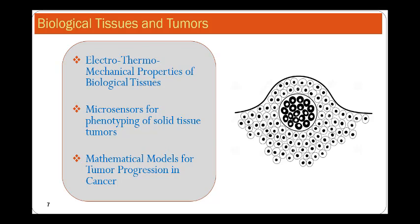We will start with understanding electrothermomechanical properties of biological tissues, where we will study electrical model of cell, electrical equivalent circuit modeling of cell culture on the surface, healthy tissues and cancerous tissues, viscoelastic modeling of soft tissues, etc.